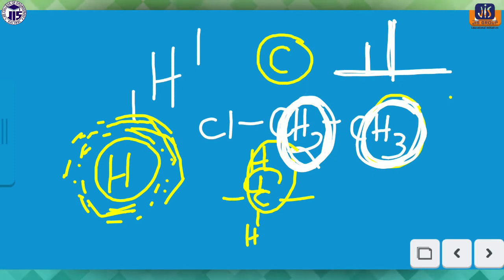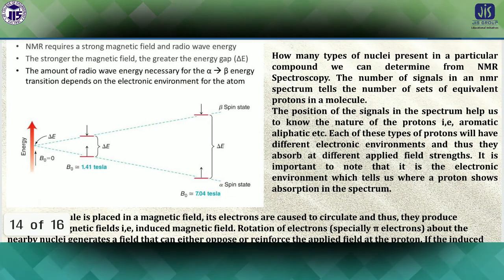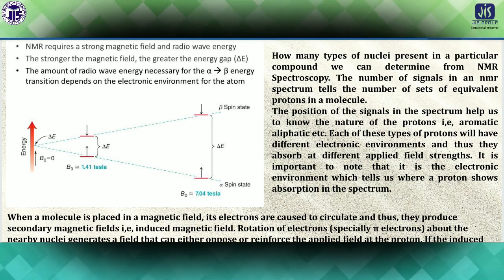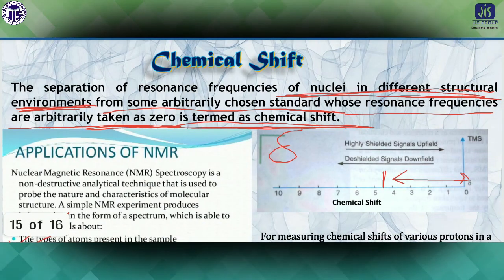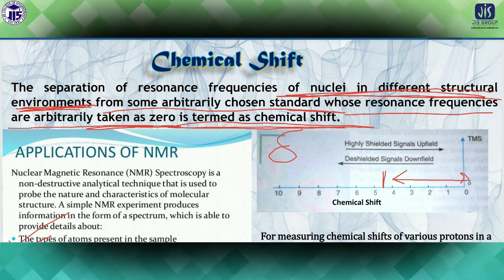To summarize today's class on NMR spectroscopy: we discussed the basic principle, the theory of nuclear spinning and generation of magnetic moment, how alpha and beta spin states are generated, how absorption occurs, why a standard like TMS tetramethylsilane is required, and the applications of NMR spectroscopy. That's all for today — meet you in the next class with a different topic. Goodbye, and thanks to all of you for attending. Take care.